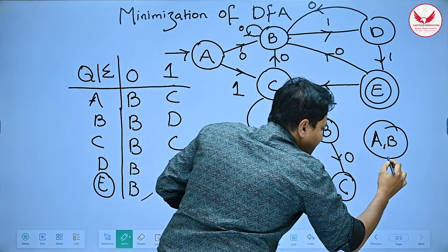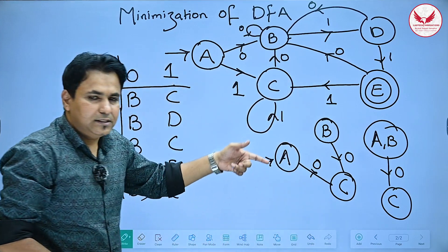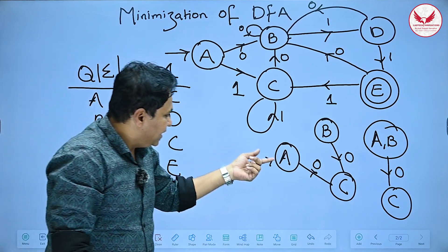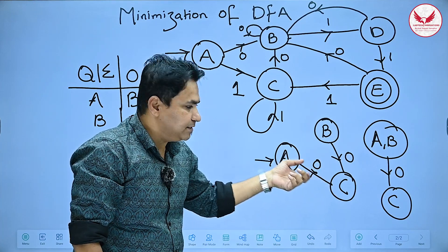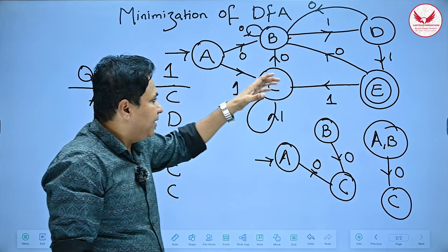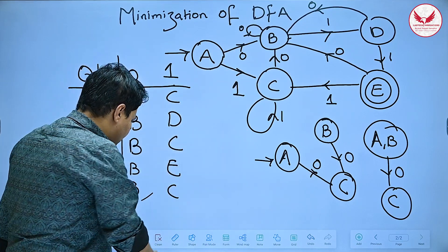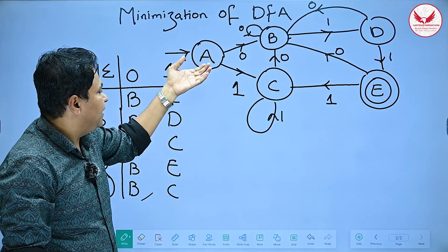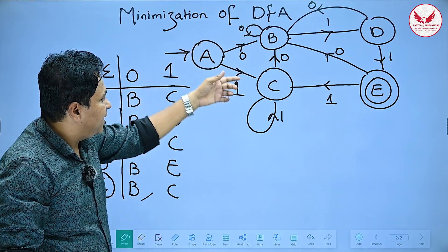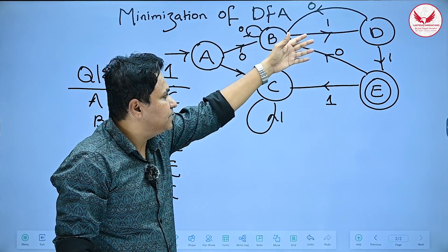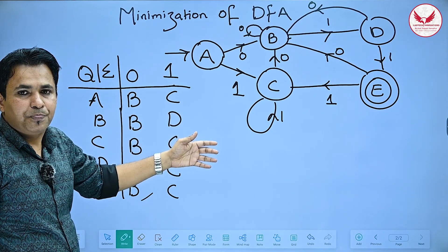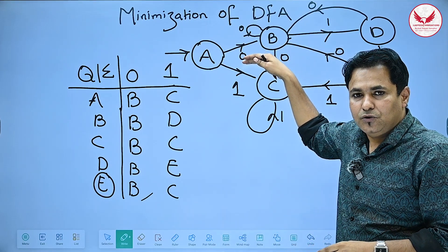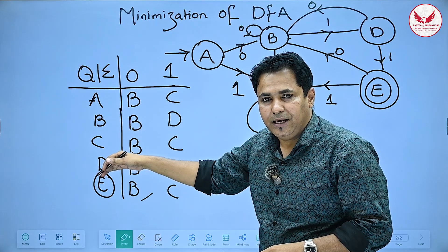By merging A and B, processing 0 still reaches state C — the same result. So we reduced three states A, B, C down to just two states. This is how we minimize a DFA by checking the input symbols. In this DFA, processing 0 in A reaches state B, processing 1 reaches state C, and from B and C, processing 0 reaches D or E via self-loop.